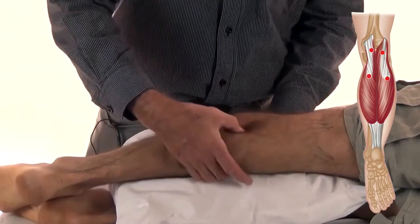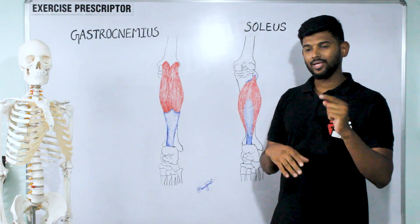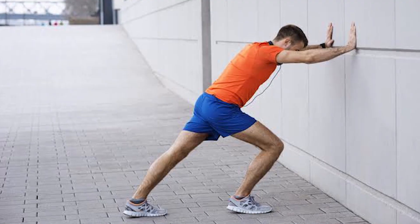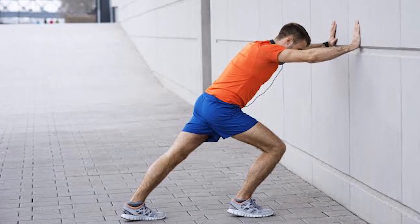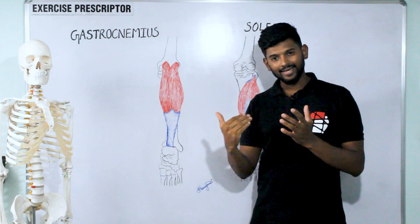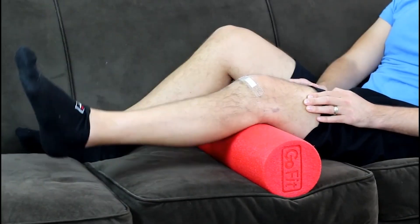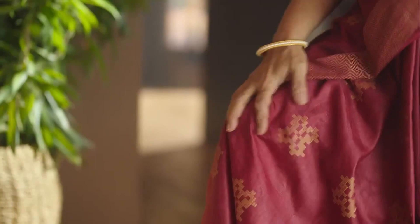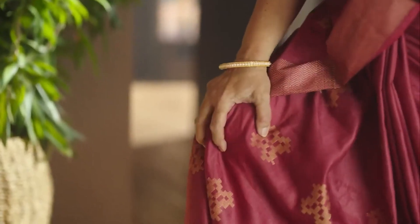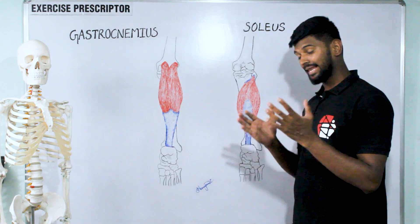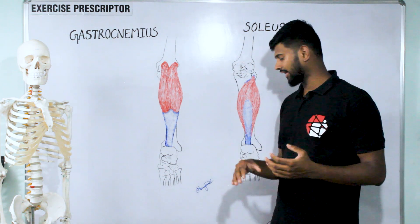Working on and releasing the gastrocnemius — using the downward-facing dog stretch and the runner's stretch — helps to allow a little more knee extension. Combined with quadriceps strengthening, this gives good results and reduces knee pain in older populations and post-surgical patients.